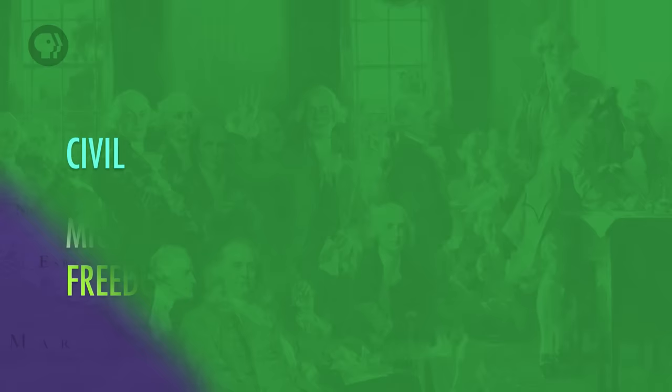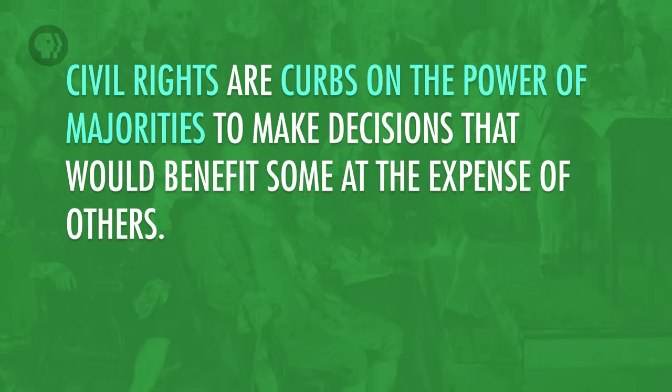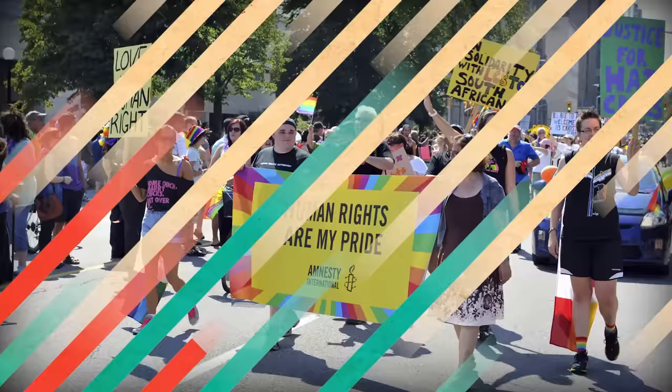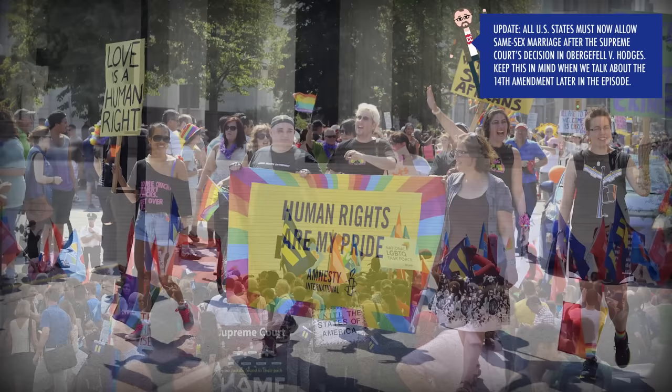Civil liberties are limitations placed on the government — basically there are things the government can't do that might interfere with your personal freedom. Civil rights are curbs on the power of majorities to make decisions that would benefit some at the expense of others. Basically civil rights are guarantees of equal citizenship and mean that citizens are protected from discrimination by majorities. Take for example same-sex marriage — you could think of it as a liberty, except that not everyone is free to marry at any given time. Same-sex marriage is a civil rights issue because in states that don't allow it, the majority of voters is denying something to a minority, creating inequality in the way that the laws work.